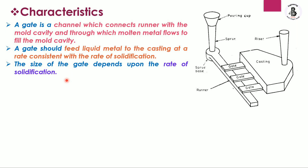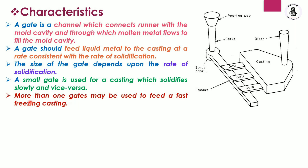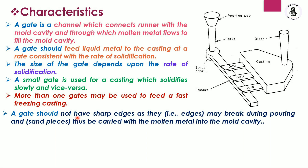The size of the gate depends upon the rate of solidification. A small gate is used for castings which solidify slowly, and vice versa. More than one gate may be used to feed a fast-freezing casting. A gate should not have sharp edges, as they may break during pouring of molten metal into the mold cavity.